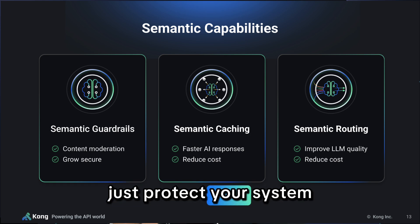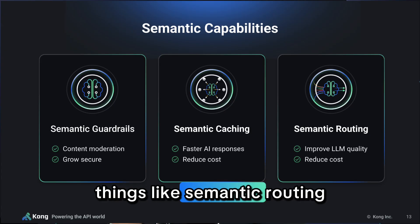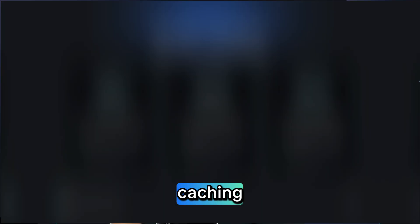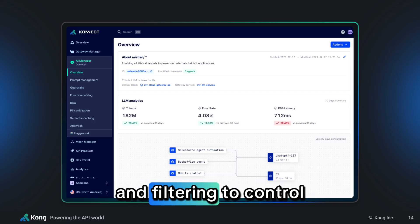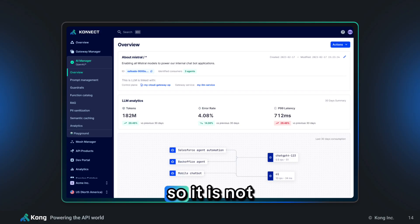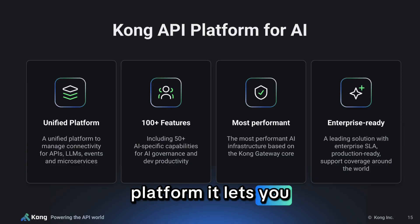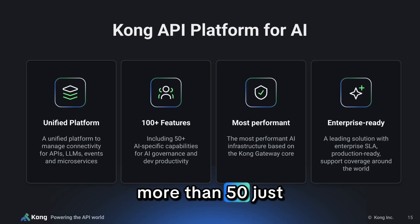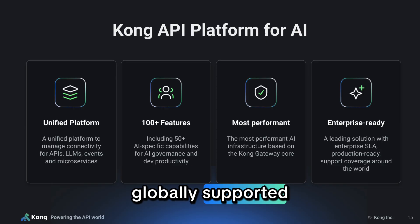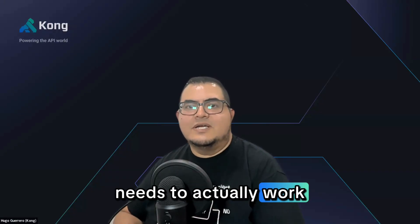Kong does more than just protect your system. It can also help your AI agent get smarter, faster, and cheaper to run. Semantic routing means the right request hits the right tool. Caching avoids reprocessing the same stuff again and again and spending more tokens. And you can layer in things like moderation and filtering to control what the AI says. So it is not just guardrails — it is also optimization with PII sanitization or automated RAG pipelines. Kong is not just a gateway; it is a unified platform. It lets you manage everything: APIs, agents, microservices, and now AI systems. You get over 100 enterprise features, more than 50 just for AI. And it is battle-tested, globally supported, and built on one of the fastest gateways out there. This is the infrastructure layer modern AI needs to actually work across teams and regions.